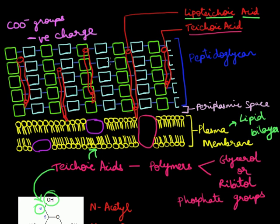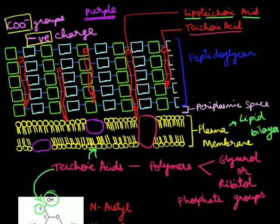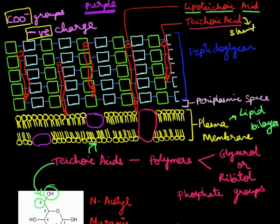The name Gram positive is not because of the charge — it is because it responds to the Gram staining technique and stains purple. However, you must remember that a Gram positive cell wall has a negative charge due to its teichoic acids, which carry COO minus groups. Teichoic acids are also believed to help maintain the structural integrity of the cell wall.